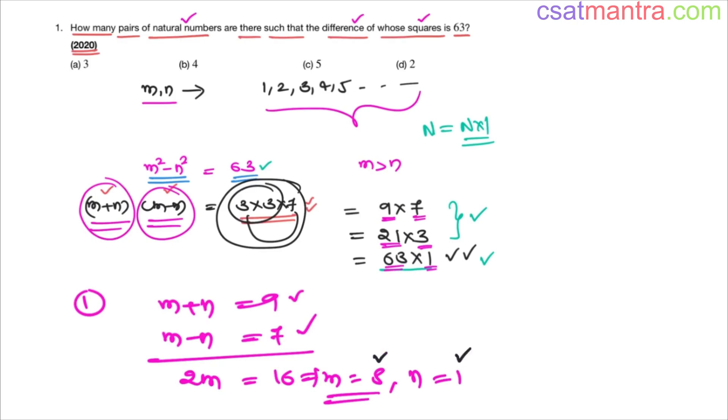So yes, these are natural numbers, and from this we got them, that means definitely their square difference would be 63. You don't need to check because from here only we got them. So this is one such pair, 8 comma 1.